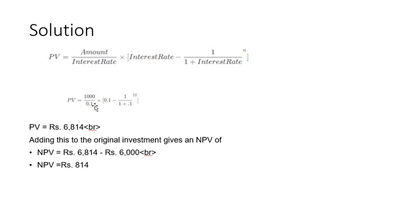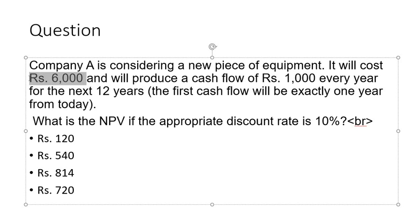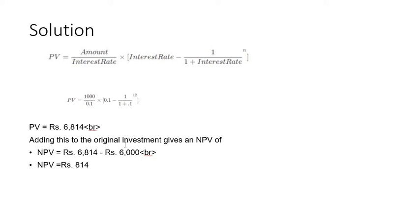Substituting values: PV = 1,000 divided by 0.1, multiplied by (1 minus 1 divided by (1.1) raised to 12), which gives rupees 6,814. NPV equals the present value of future cash flows minus the initial investment: 6,814 minus 6,000 equals rupees 814. This is a straightforward question if you know the formula — memorize the annuity present value formula, as NPV is one of the hot topics in the CAIB exam with at least one question expected.